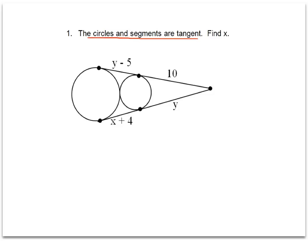We have a theorem that says if two segments from the same exterior point are tangent to a circle, then they are congruent. That means from this point, this segment and this segment are each tangent to the circle at different places, and that makes them congruent to each other.